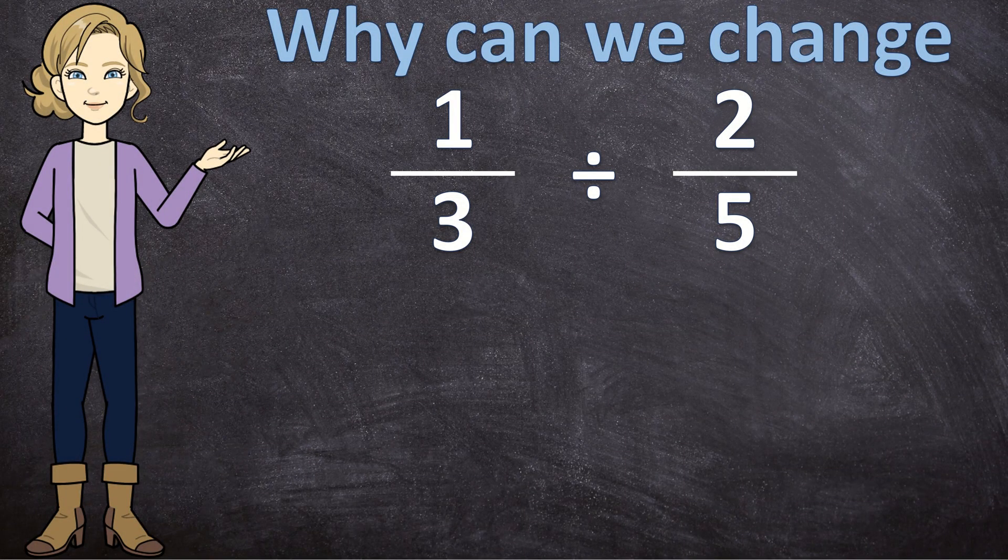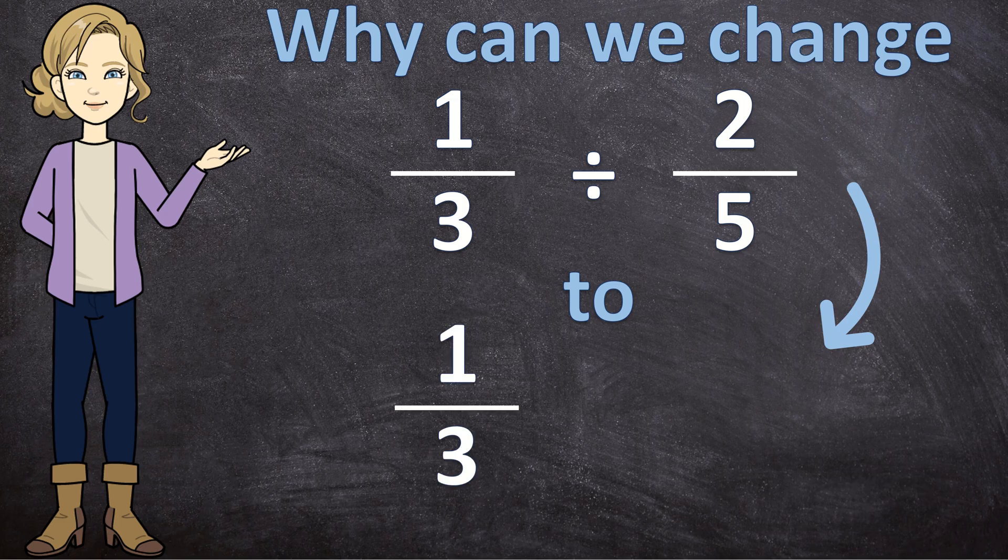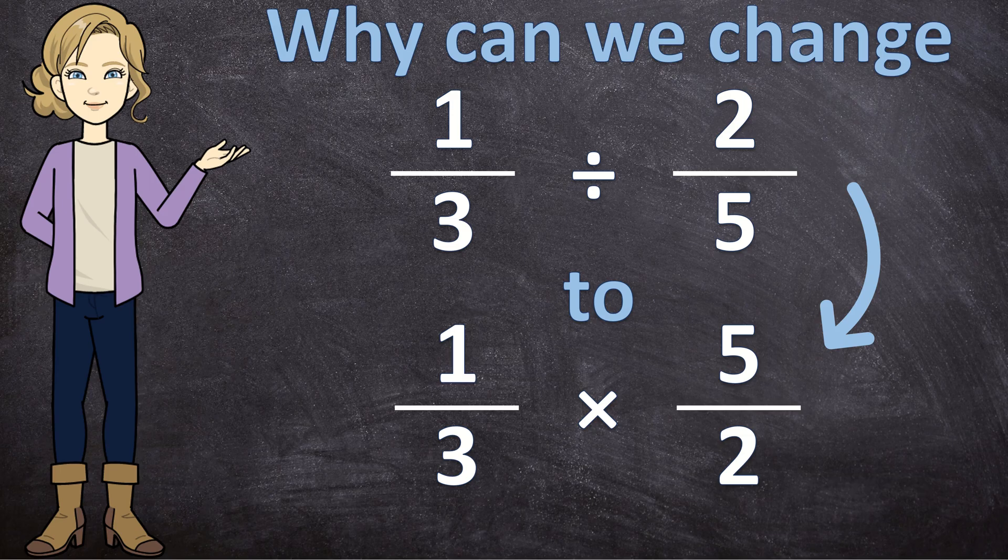When we are dividing by a fraction, why can we change the division to multiplication and swap the second fraction around? I used this method in the previous video, but in this video I want to tell you the reasoning behind why we can do it.